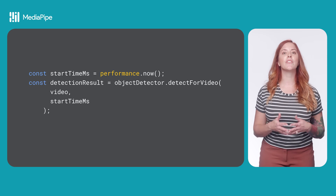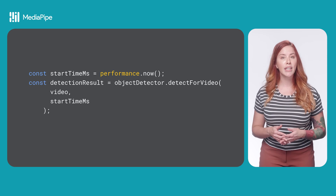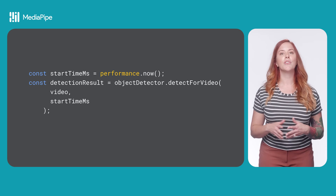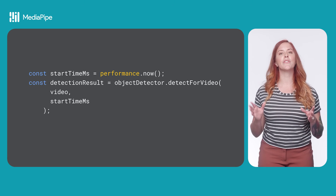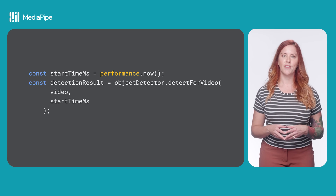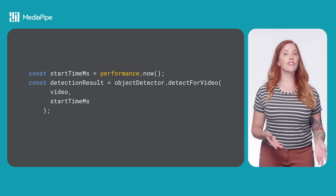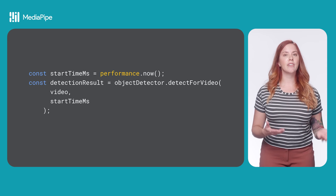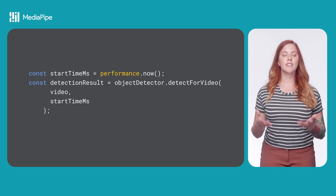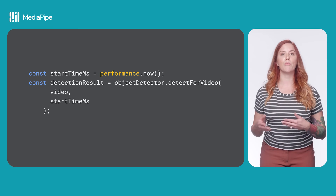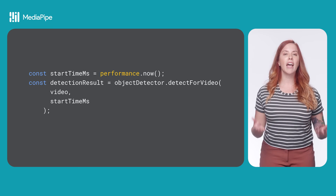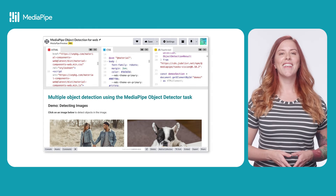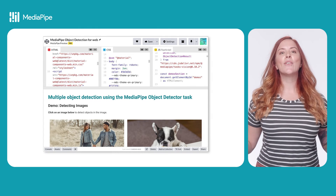To detect objects in frames of a video, get the current time using performance.now. Then get the object detection result using the ObjectDetector.detectForVideo method, passing the video element and the current time.